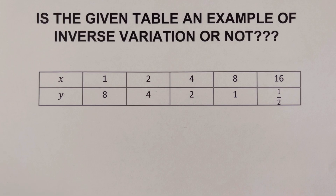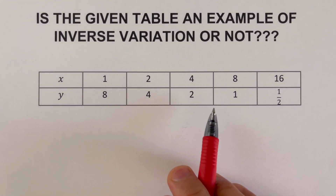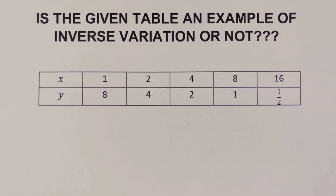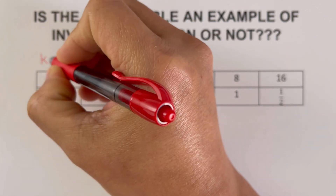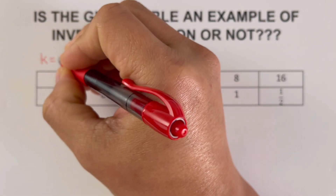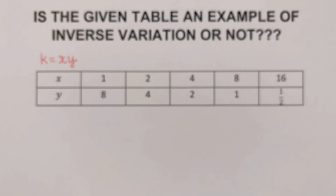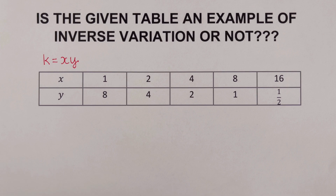Going back to the first example, we are given a table of values and we need to determine if this table is an example of an inverse variation or not. To do so, we will determine the proportionality constant k, which for an inverse variation equals the product of x and y. We will multiply the x values and the y values together.